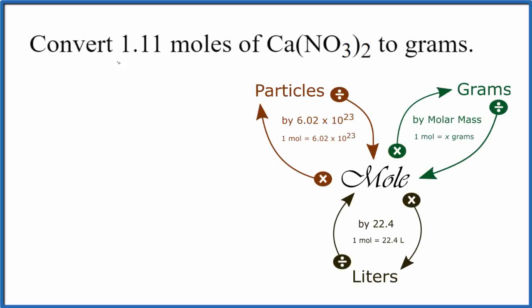In this video, we'll convert 1.11 moles of Ca(NO3)2 to grams. The 1.11 is just a number I made up for the video. So we have 1.11 moles of calcium nitrate.